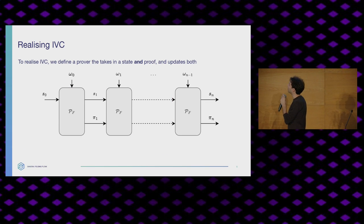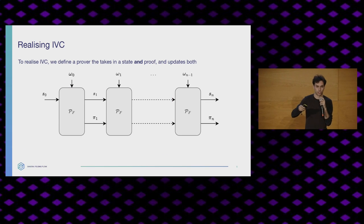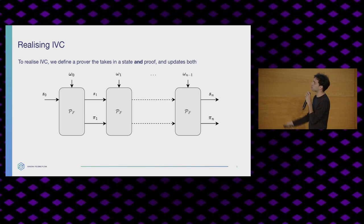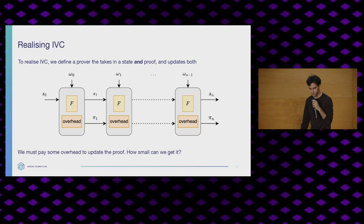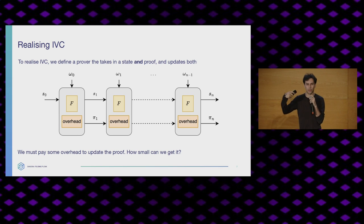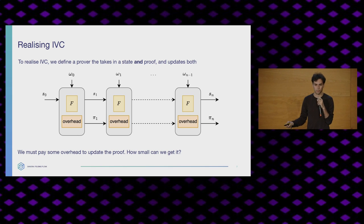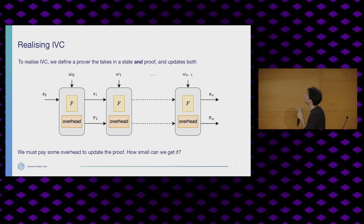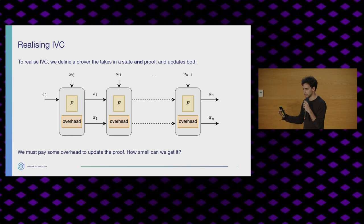Let's see how we do this. We have a new row of proofs being carried along, and the question is what happens inside this black box — the prover. We're going to have to run the function f because our state is coming in and coming out. We're also going to have to do some extra work on the proof, because we have a proof coming in and a proof coming out. That extra work we call the overhead. This overhead, we pay for it at every step in our computation. So the question is how small can we get this — that will be the defining feature in how performant our system is.